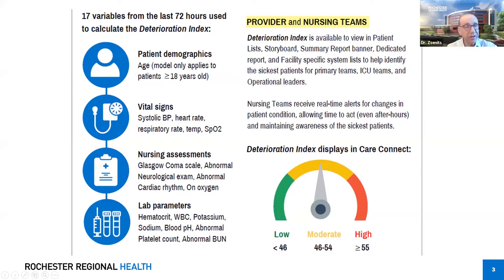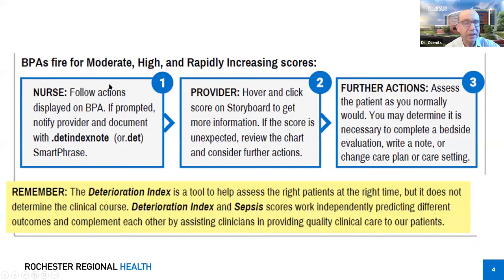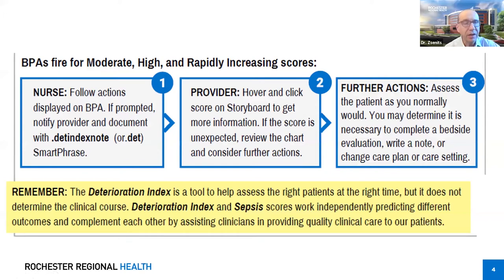When the BPA fires, an alert fires indicating the deterioration index is high — it can fire for moderate, for high, and for rapidly increasing scores. It only pops up for the nurse. If it's something chronically elevated and they know about it with no change, they can dismiss the alert. Otherwise, they should notify the provider and write a quick note about what happened.